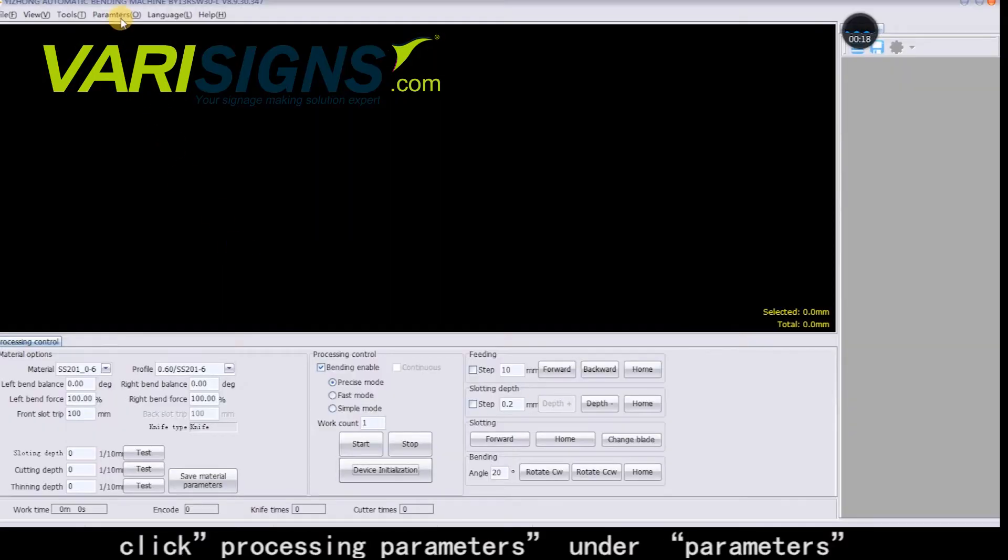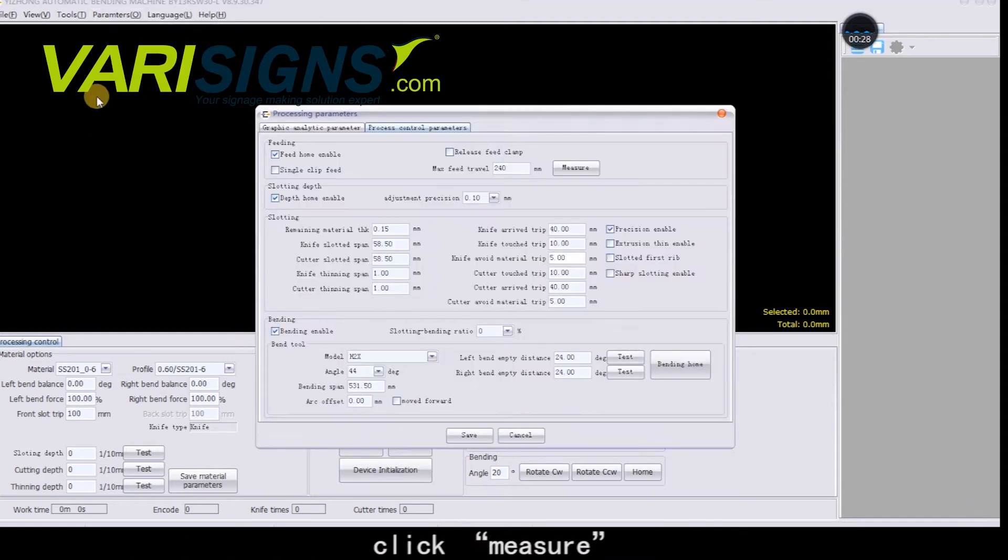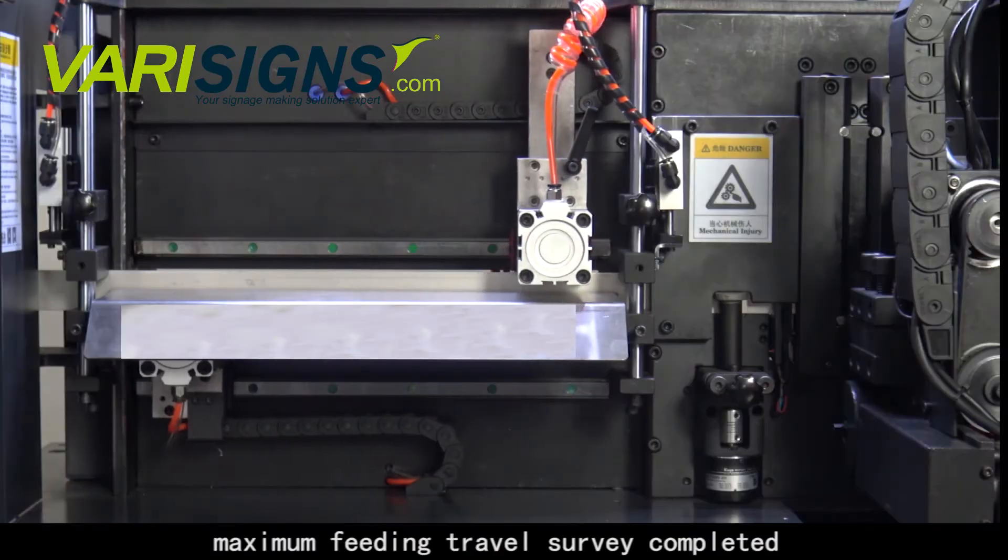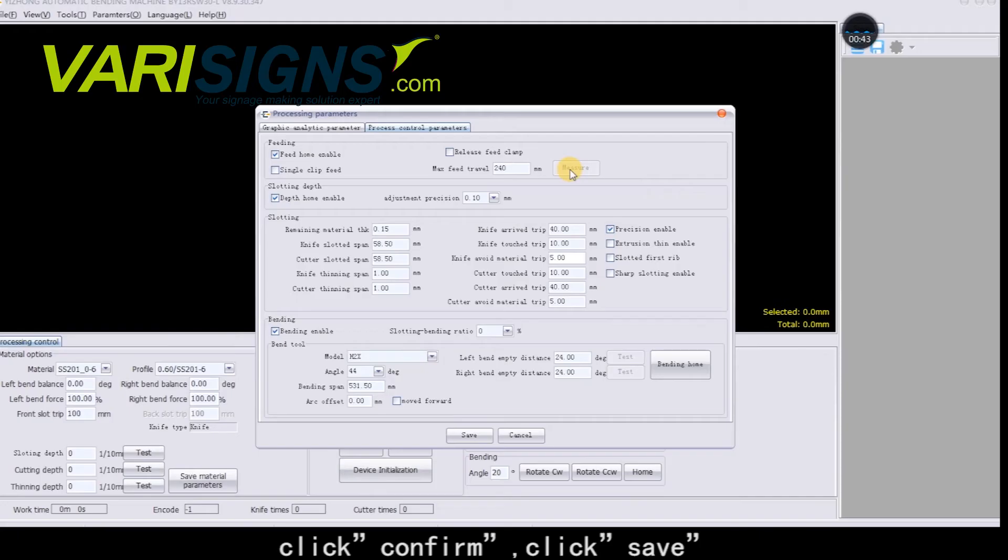Click processing parameters under parameters. Click measure. Maximum feeding travel survey completed. Click confirm. Click save.